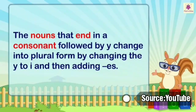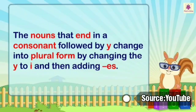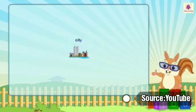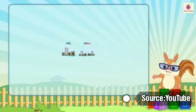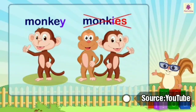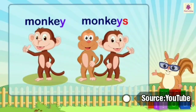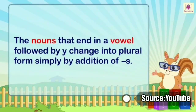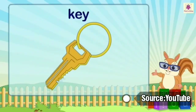The nouns that end in a consonant followed by Y change into plural form by changing the Y to I and then adding ES. For example: city → cities; country → countries. However, don't drop the Y from monkey — the plural of monkey is not monkies; it is monkeys. Just add S at the end. The nouns that end in a vowel followed by Y change into plural form simply by the addition of S. For example: key → keys.